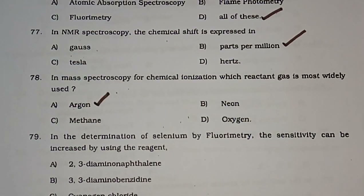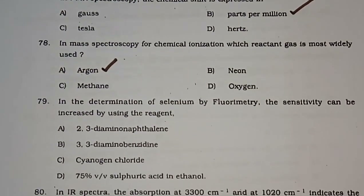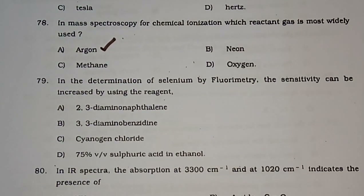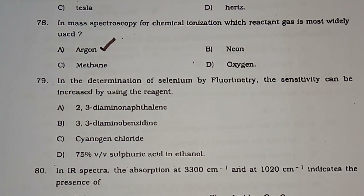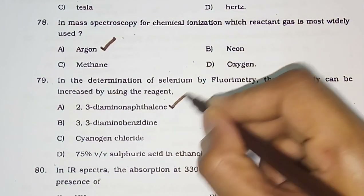Question number 79: In the determination of selenium by fluorometry, sensitivity can be increased by using the reagent — 2,3-diaminonaphthalene, 3,3-diaminobenzidine, cyanogen chloride, or 75% w/v sulfuric acid in ethanol. The correct answer is 2,3-diaminonaphthalene.